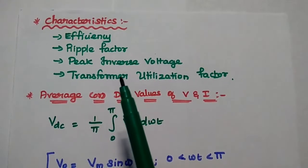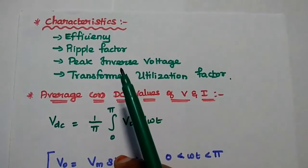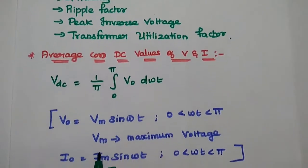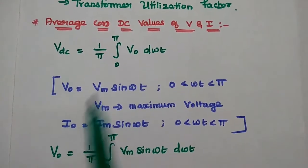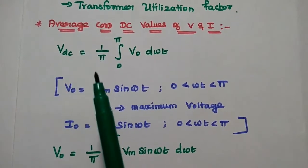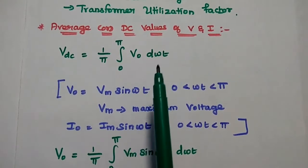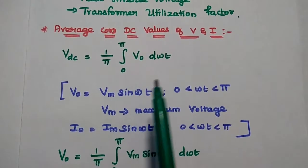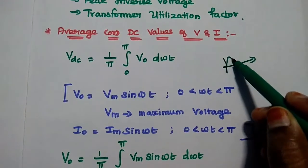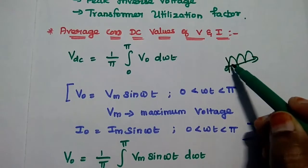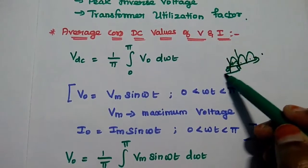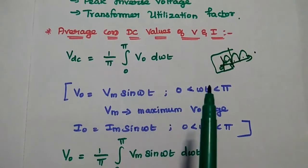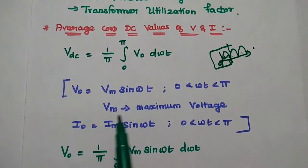Next we are going to derive the important characteristics of bridge rectifier: efficiency, ripple factor, peak inverse voltage, and transformer utilization factor. Starting with the average or DC values of voltage and current — the average is also known as the DC value. The DC voltage can be obtained by taking the integration of output voltage with respect to ωt from 0 to π, divided by the total time period. The output signal is a full wave rectified signal, and we can write the output voltage as Vm sin(ωt) over the range 0 to π, where Vm is the maximum voltage.